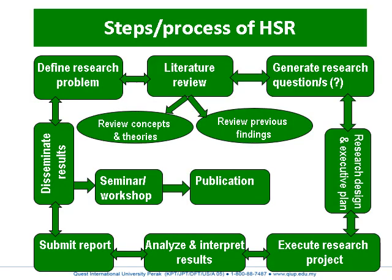The steps in the process of health system research are similar to community-based research studied earlier. First is to define the research problem — for example, problems faced by diabetic patients in Malaysia. Then conduct a literature review, looking at all previous study findings to identify what problem to study. You might find, for instance, that patient waiting time in diabetic clinics is a key issue.